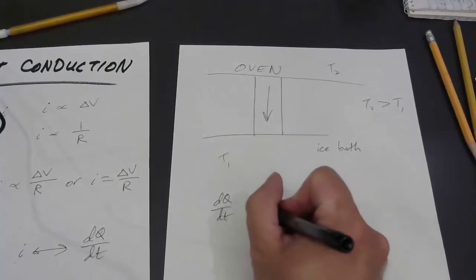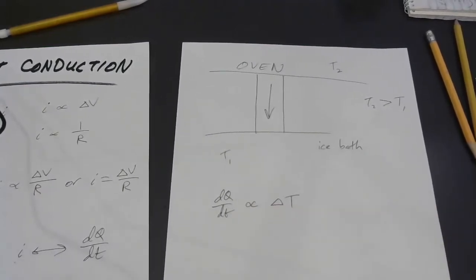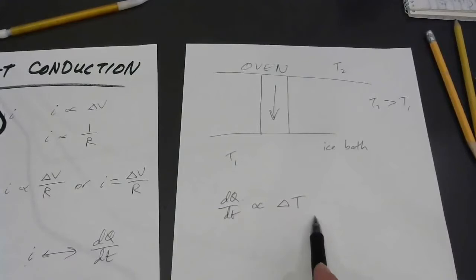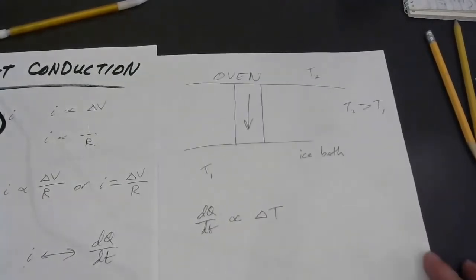Hopefully, you've read about that in your book. So, that should be proportional to not delta V, not the voltage or potential difference, but in this case, the temperature difference. So, you can think of a temperature difference like a voltage, if you like, if that helps.